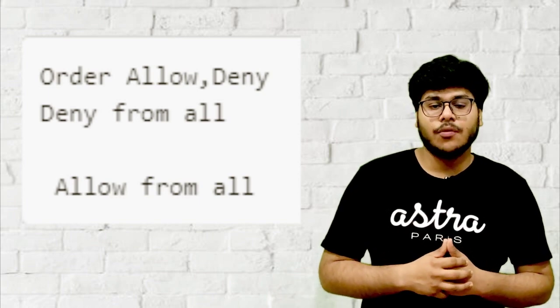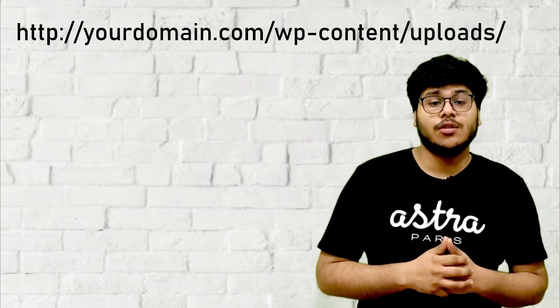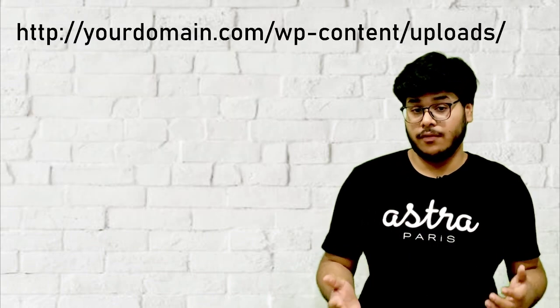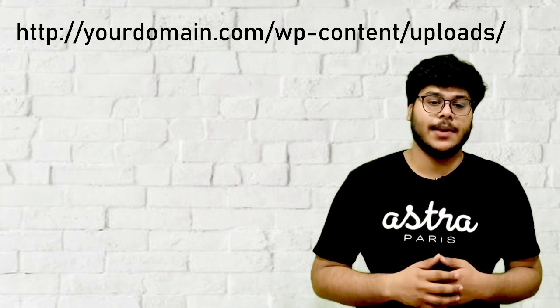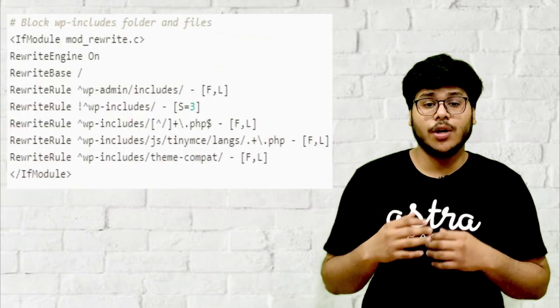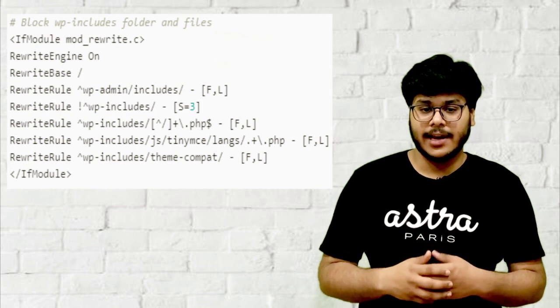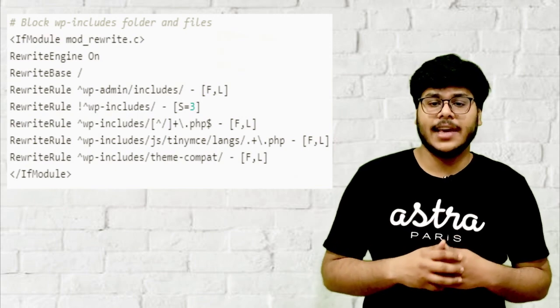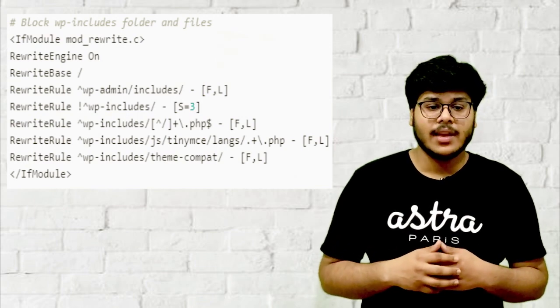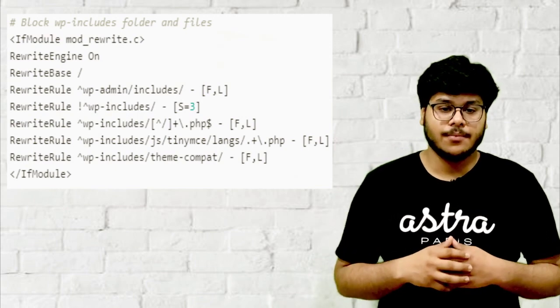Now try to access this link — it should give a 404 or a blank page. To hide your WP includes directory, add this code to your htaccess file in your public HTML and save it.